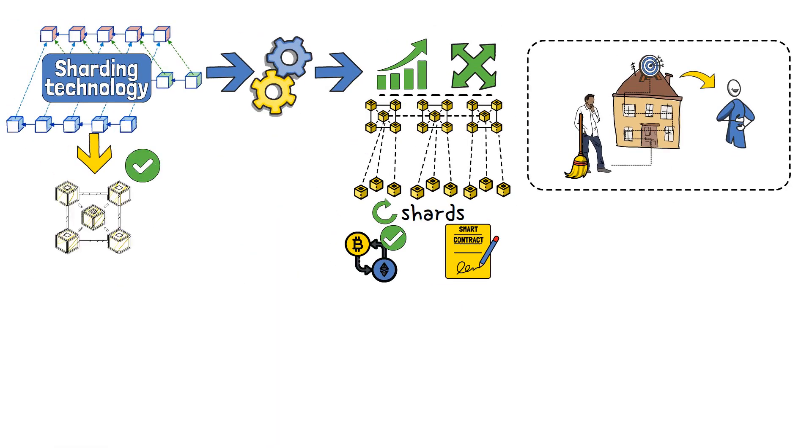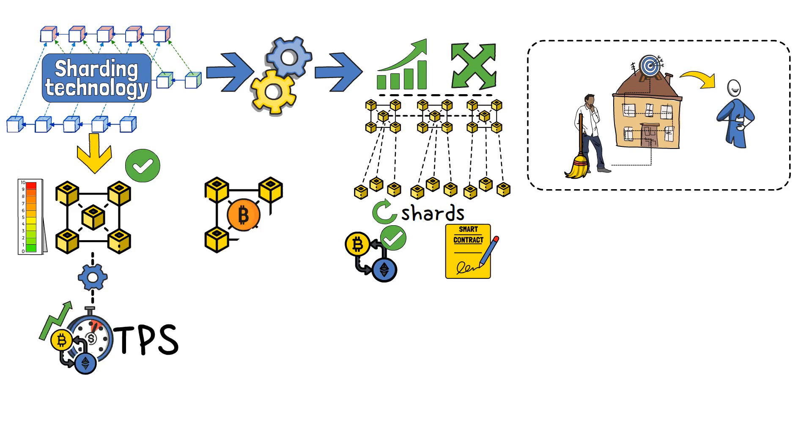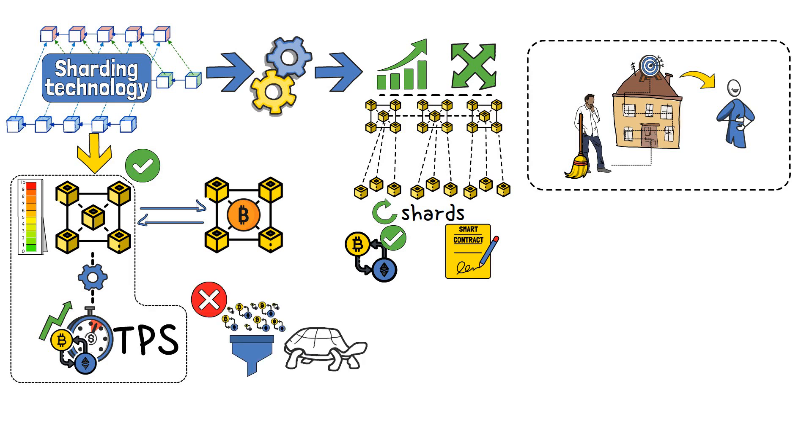In essence, sharding allows a blockchain network to scale its capacity to handle a significantly higher volume of transactions per second, or TPS, compared to traditional blockchains. It's achieved because sharding stops the blockchain from being clogged by too many transactions, and thus, slowing down everything that's going on within it. This strategy introduces the concept of parallel processing.